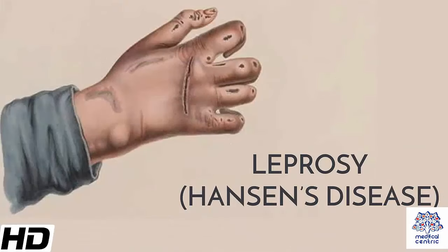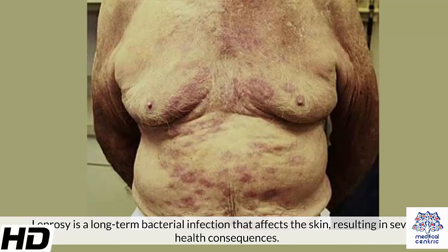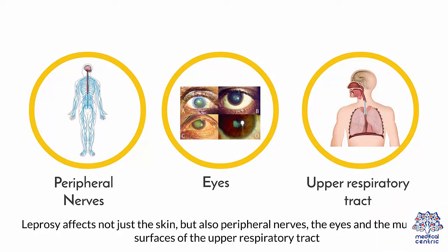Today's topic is leprosy or Hansen's disease. Leprosy is a long-term bacterial infection that affects the skin, resulting in severe health consequences. Leprosy affects not just the skin, but also peripheral nerves, the eyes, and the mucosal surfaces of the upper respiratory tract.